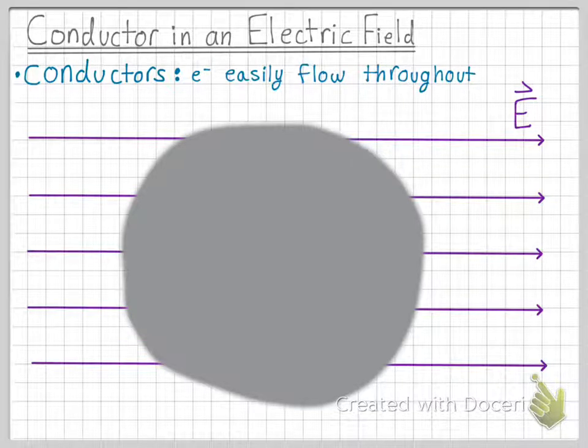We know that conductors have charges that easily flow, and we know that negative charges want to flow in the direction that is opposite the electric field. So all of our negative charges are going to end up on this side of the conductor.